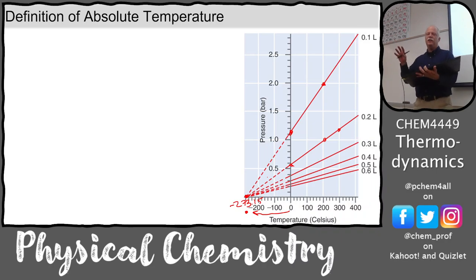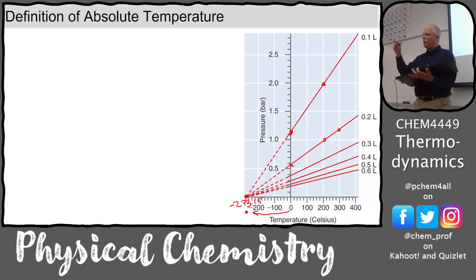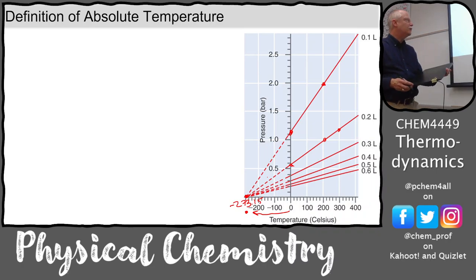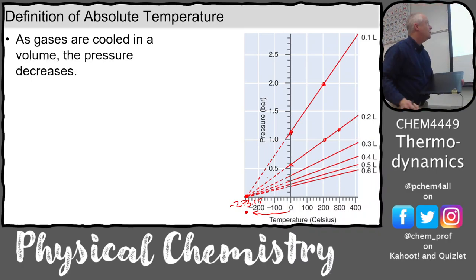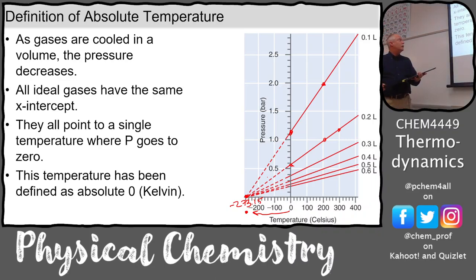We have to use extrapolation because if we actually cool things down they're no longer gases — they become liquids and then solids, and the volumes don't actually go to zero. So we look at the ideal gas region and extrapolate down to where volume goes to zero. That's what we call absolute zero.